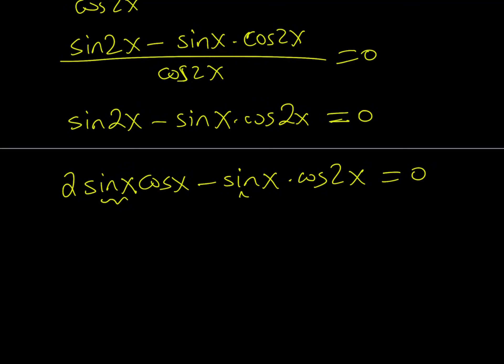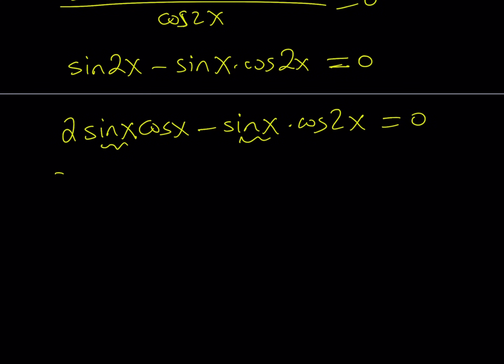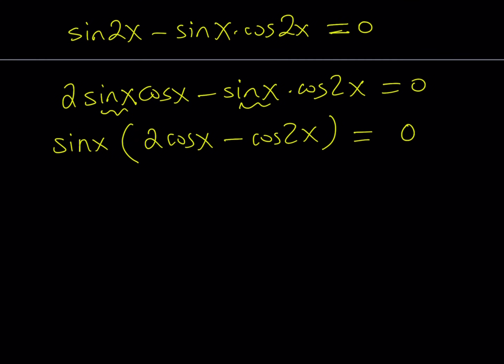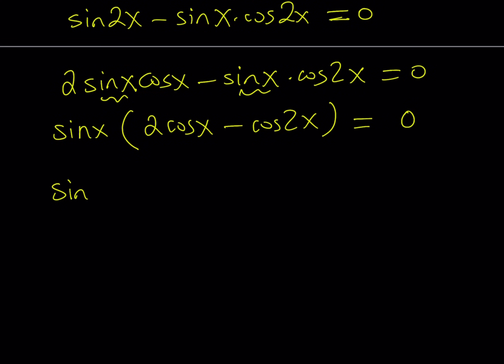Notice that I have a common factor. So why not factor it? Take out sine x, and then you'll get 2 cosine x minus cosine of 2x. And at this point, you can safely say, well, cosine 2x is not the same as 2 cosine x, so they're not equal. But in this case, they are equal. But in general, they're not. So this gives us two possibilities. Either sine x is equal to 0, or 2 cosine x is equal to cosine 2x.